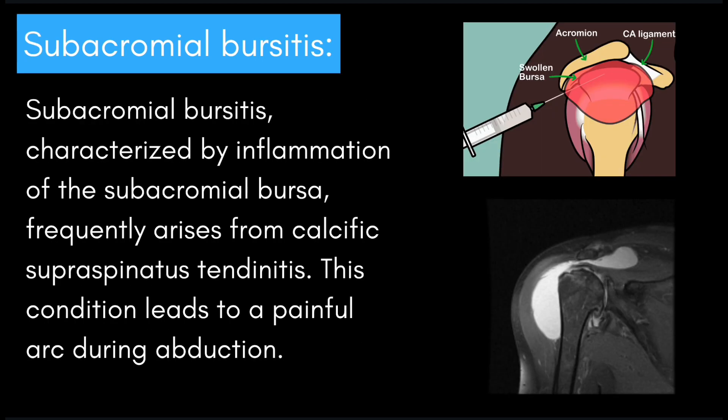Moving on, let's talk about subacromial bursitis. Subacromial bursitis is characterized by inflammation of the subacromial bursa and frequently arises from calcific supraspinatus tendonitis. This condition leads to a painful arc during abduction. There's a cartoon graphic of subacromial bursitis on the upper right and an MRI image on the lower right.